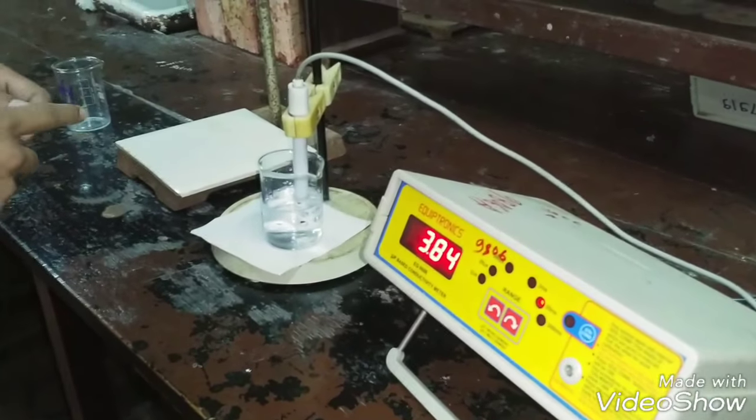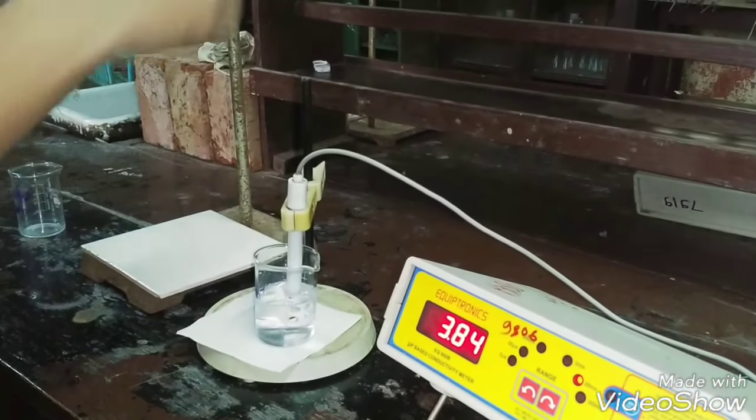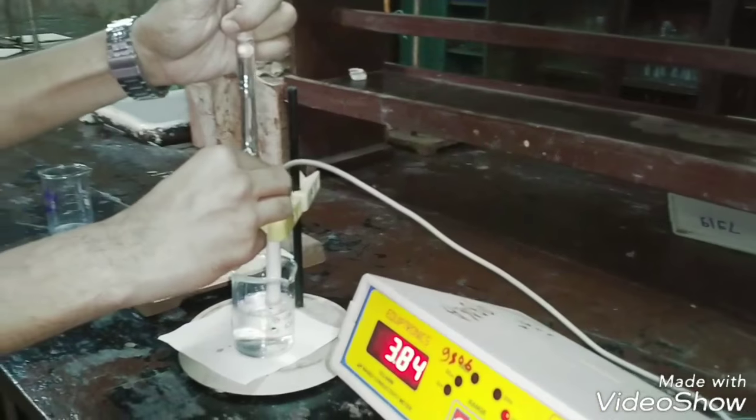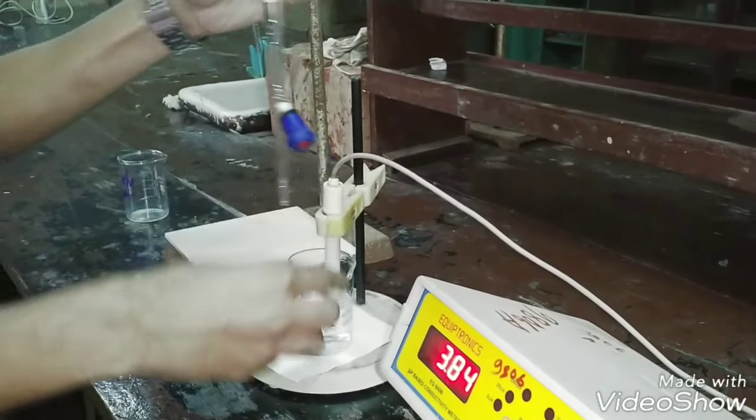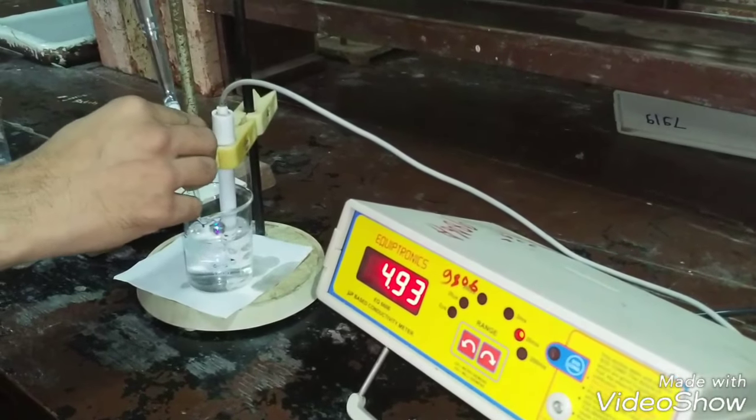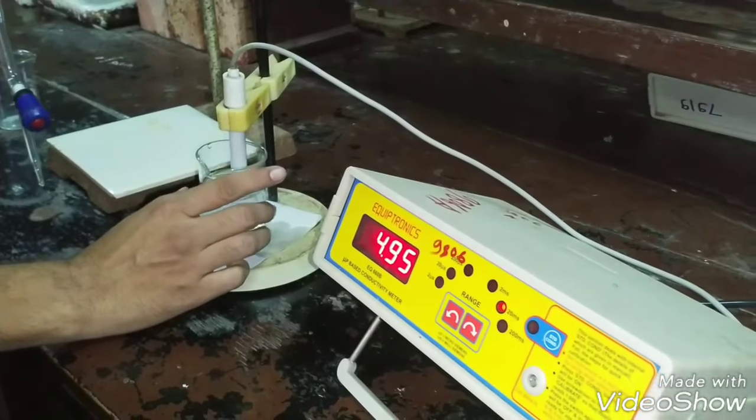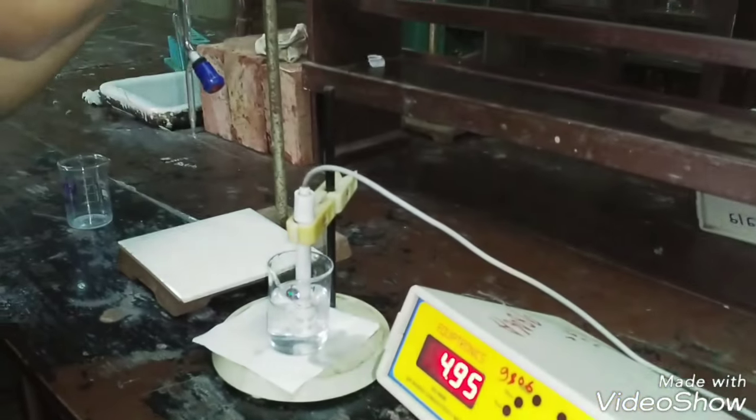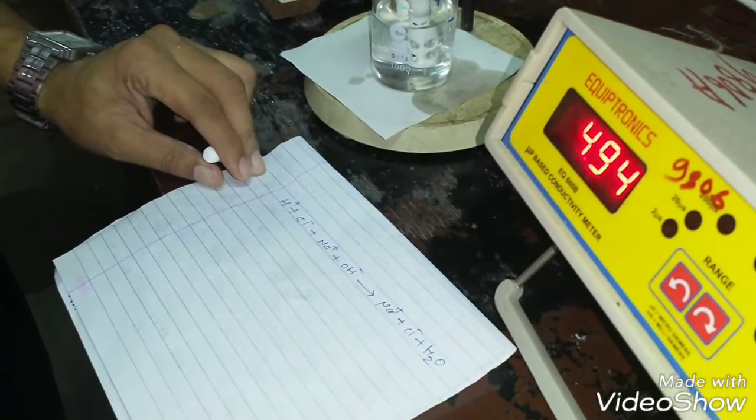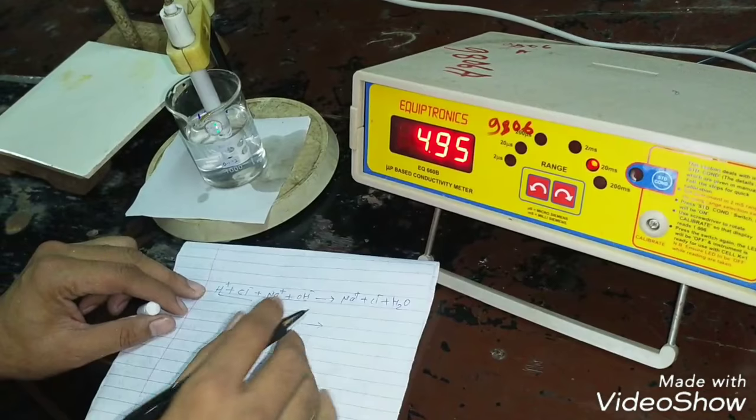In neutralization, the conductivity goes to minimum and on further addition of NaOH, conductivity starts increasing. After the neutralization point, due to further addition of NaOH, the conductance goes on increasing. And it is only due to excess OH- ions which forms NaOH. After the complete neutralization of HCl, the further added NaOH produces OH- ions and due to which the conductance starts increasing.